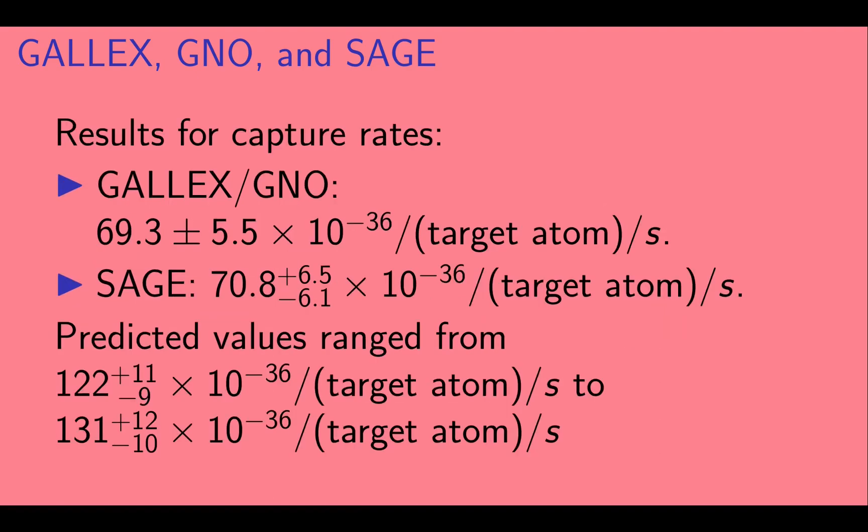The combined result for GALLEX and GNO was a capture rate of 69.3 plus or minus 5.5 times 10 to the minus 36, while SAGE's was 70.8 with a slightly larger error bar. They compared those with the values predicted from solar models, which were almost twice as large, with error bars of about 10%.